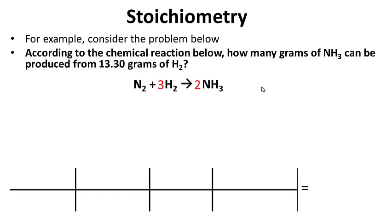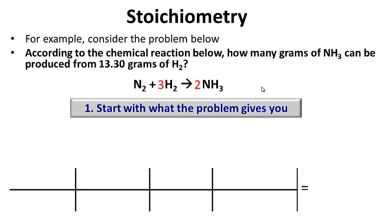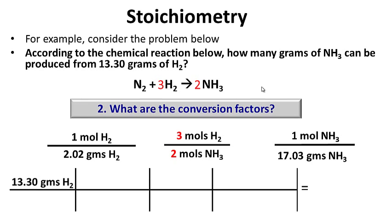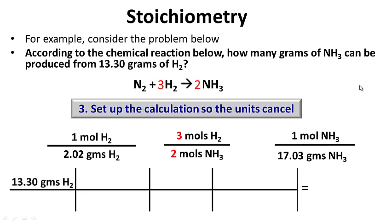Follow our steps. Start with what the problem gives us: 13.3 grams of hydrogen gas. What are the conversion factors? We know the molar mass of hydrogen — one mole of H2 has a molar mass of 2.02 grams of H2. We know that three moles of H2 can produce two moles of ammonia, and we know the molar mass of ammonia: one mole of NH3 weighs 17.03 grams. Set up the calculation so the units cancel.